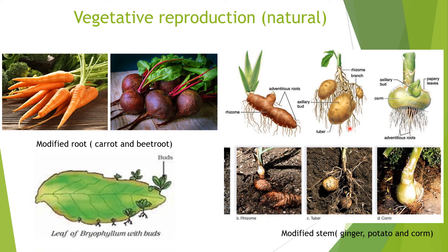The next one is the leaf. In that case, bryophyllum — see here at the margin of the leaves, new buds are formed and from here adventitious roots are emerging. With time, these buds are detached and produce a new plant. So in this way, modified roots, stems, and leaves are all used for vegetative reproduction, and these are all natural processes.